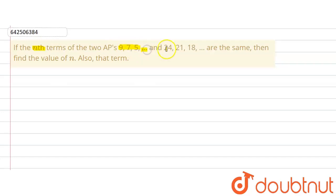and the other AP is 24, 21, 18, and so on. The question says that the nth terms of both APs are the same, and we need to find the value of n and also that term, the nth term.